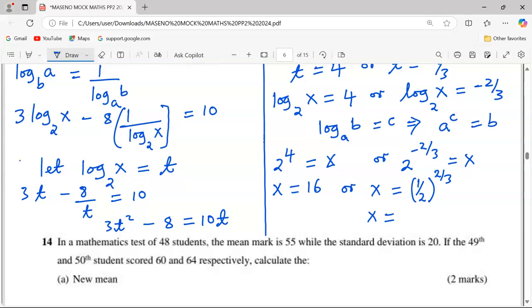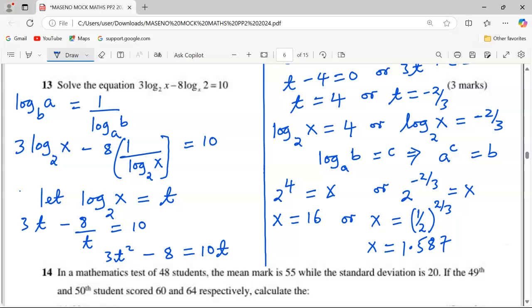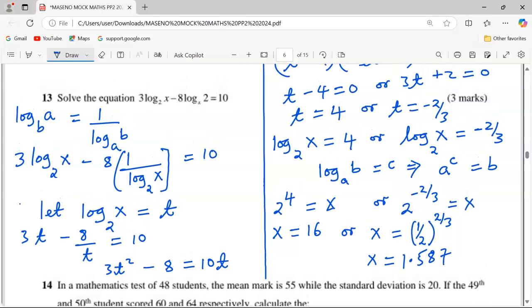And at this point, we will say x will be the cube root of 1/2, then squared, because this again becomes the fractional law of indices. Therefore, the cube root of 1/2 squared will give us 1.587 to four significant figures. So those are the possible values of x: 16 and 1.587.